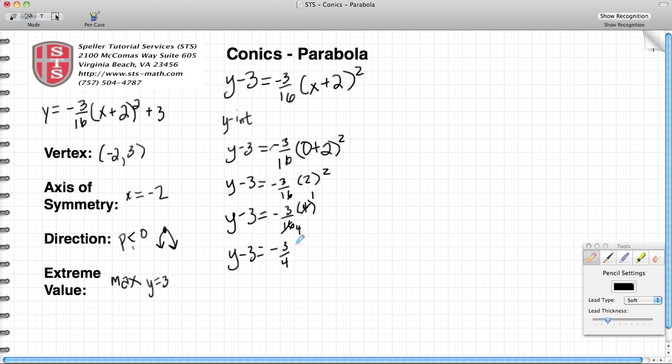My goal here is to isolate the y variable because I need to find out what y is equal to. So I'm going to add 3 to both sides, and that's going to give me y is equal to negative 3 fourths plus 3 over 1. I'm using 3 over 1 because I know I'm going to have to add these two fractions together, so I'm using my understood denominator of 1 for the whole number 3.